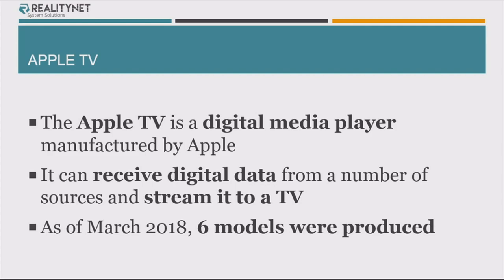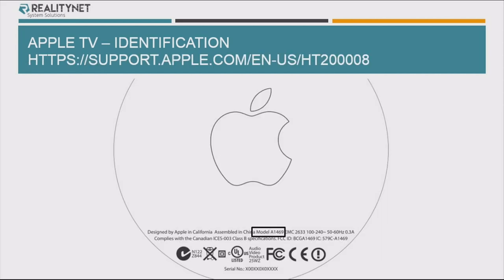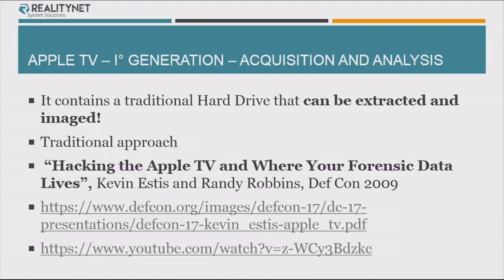You all know what the Apple TV is. There are six models up to now. These models can be identified by a model number and a hardware model number, as you saw yesterday. As always in forensics, the first step is to identify what we have in front of us. The model number is quite easy to find on an iOS device — you can find it on the back of the device. Every model is labeled with 'A' and four digits after. This is interesting so that you can understand what you can really get from the device.